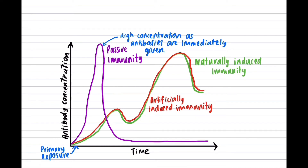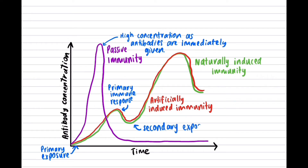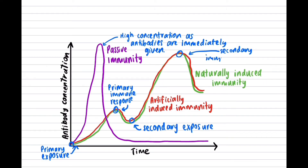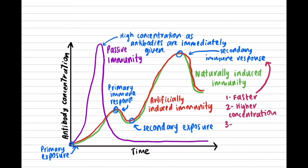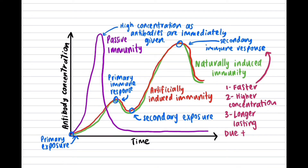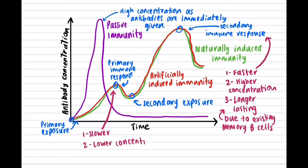Active immunity begins with no antibodies until the primary exposure, where plasma B cells and memory B cells are produced via the antibody-mediated response, increasing antibody concentration. During the primary exposure, the concentration of antibodies is very low and the response is slow. After the primary exposure, small concentrations of memory B cells remain in the blood, which is why the initial antibody concentration is greater at the secondary exposure. Because of these memory B cells, the secondary response is much faster and produces a higher concentration of antibodies, since memory B cells can quickly differentiate to produce antibodies. This active immunity is longer lasting than passive immunity, which is short term.